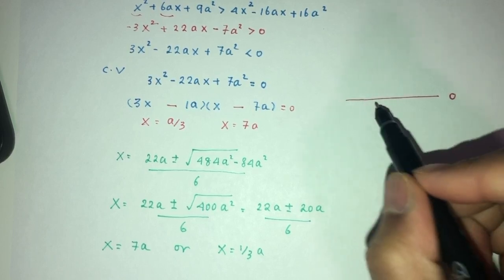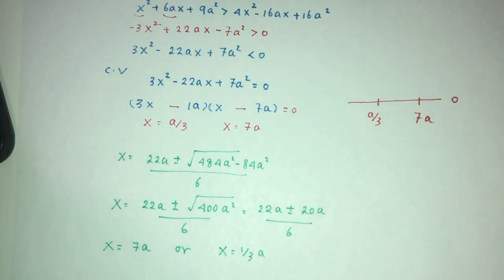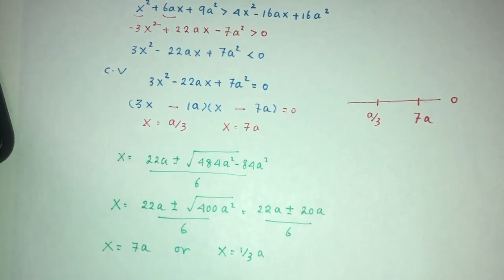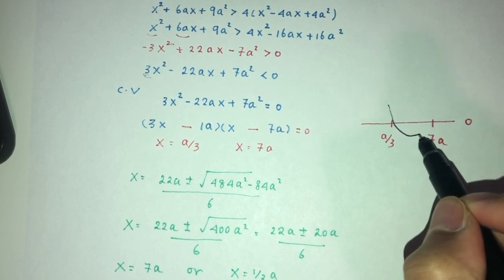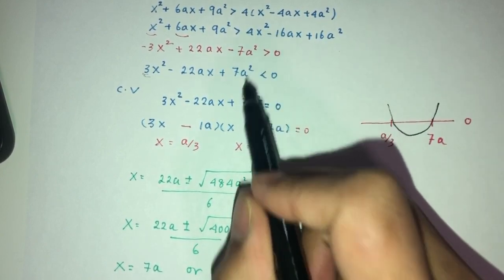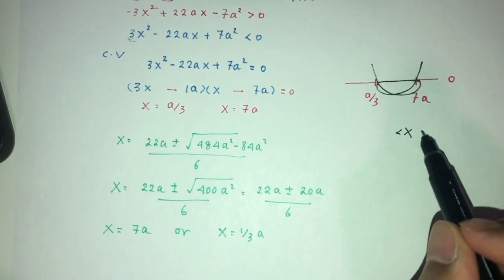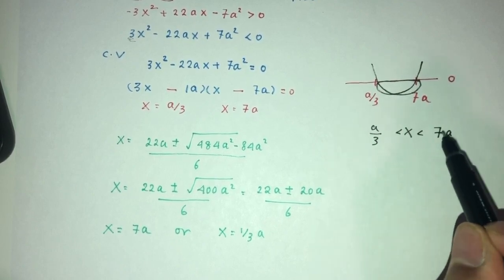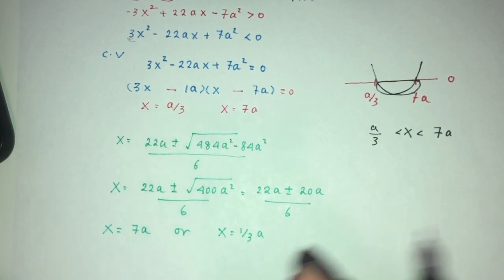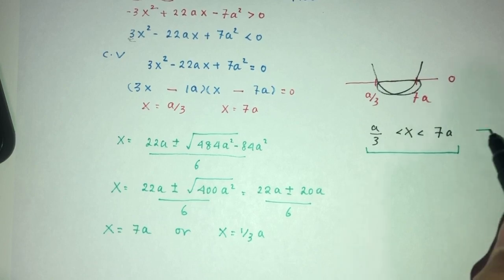Plotting the curve: the critical points are a/3 and 7a. Since the coefficient of x² is positive, it's a minimum curve, so we care about the region below zero — between the two roots. Therefore x must satisfy a/3 < x < 7a. That is your answer to question one.